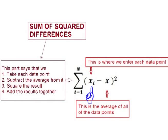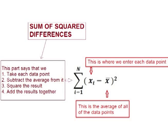The formula shows an x with a small i next to it, which means plug each data point in here as the x value. The x with a line over it is the average or mean of all the data points. In some examples, this is displayed as a small u. So what this section says to do is to take each data point and subtract the mean from that data point. This gives us the distance from each data point to the mean.